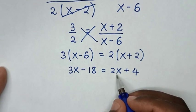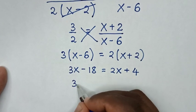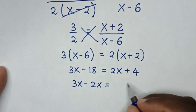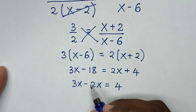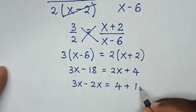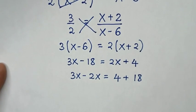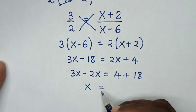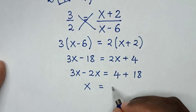Then we take 2x to the left side. So it will be 3x minus 2x is equal to 4. Then we take negative 18 to the right side, so it will be plus 18. Then in the next step, 3x minus 2x is x, is equal to 4 plus 18 is 22.